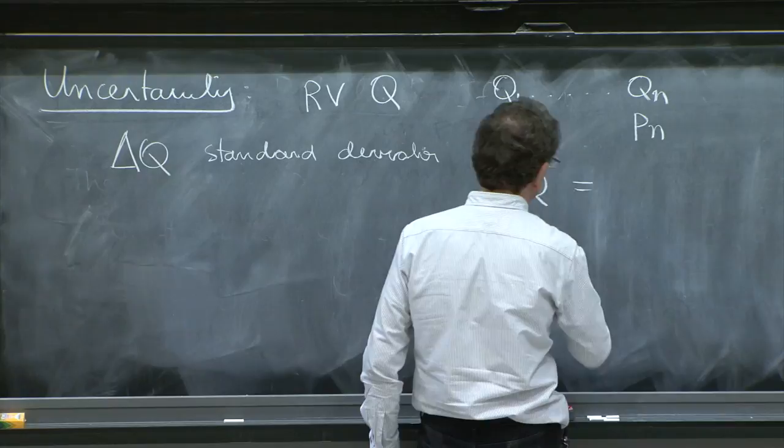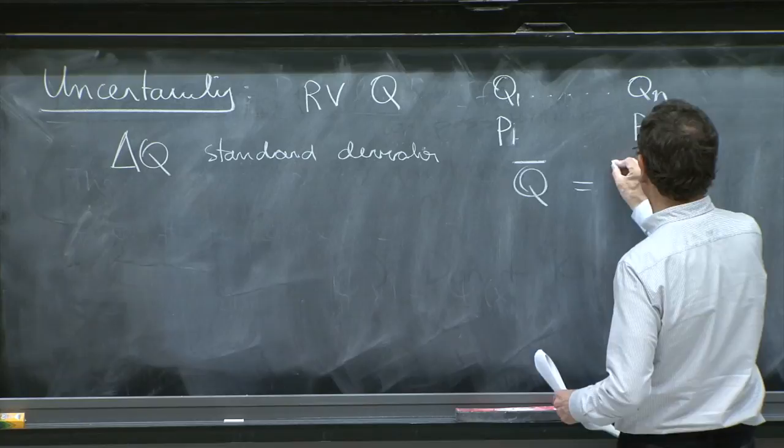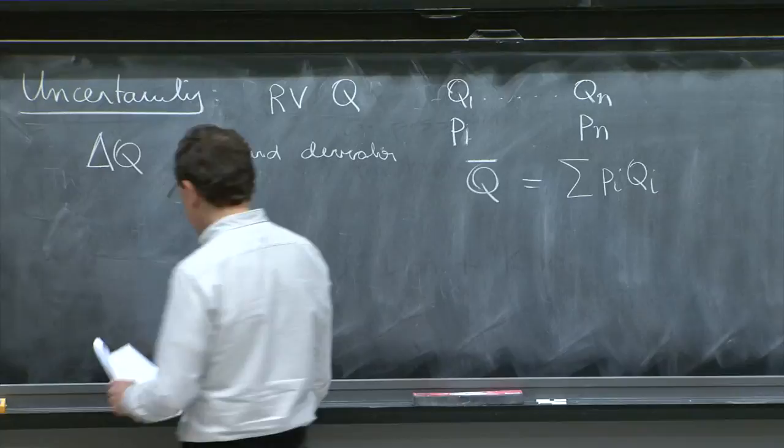Which we've defined last time. I think I put braces, but bar is kind of nice sometimes for random variables. And it's the sum of the pi times the qi's.